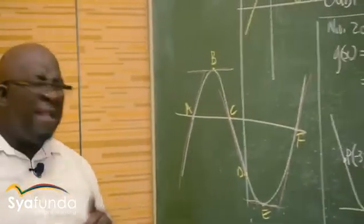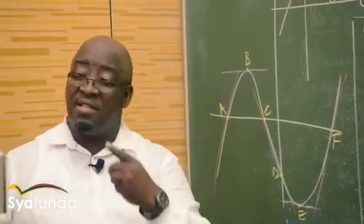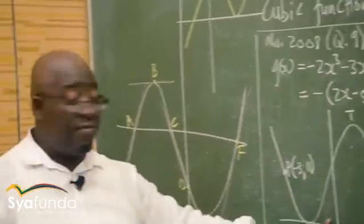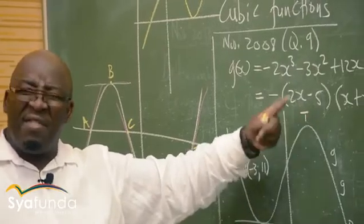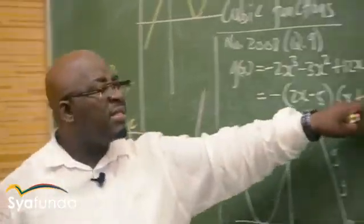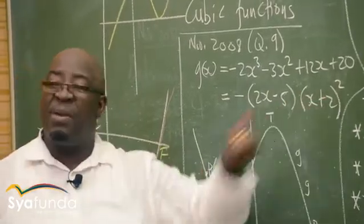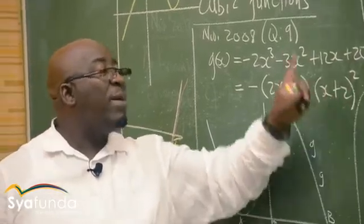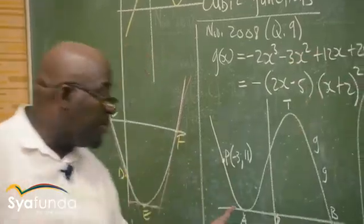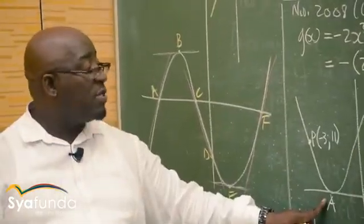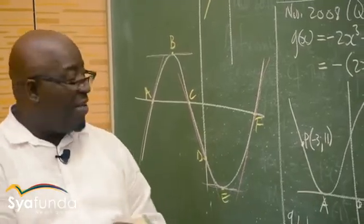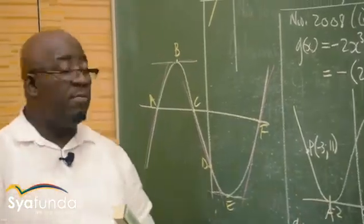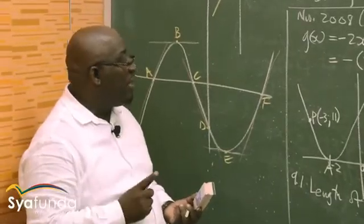Let's look at the first question: find the length of AB. This is the equation of the graph, and they have factorized it for us. Looking at the factored form, we see x plus 2 into x plus 2. This means x equals minus 2 is a repeated root — a turning point. From the other factor, x equals 5 over 2. They are asking for the x-intercepts in disguise. We let the function equal to zero and factorize. So x equals minus 2, or x equals 5 over 2.